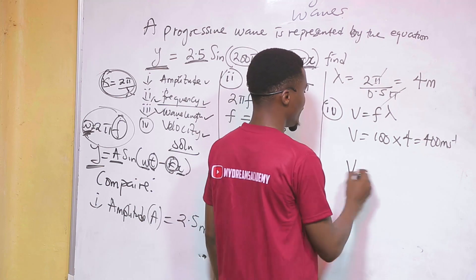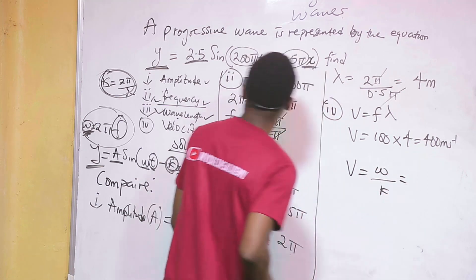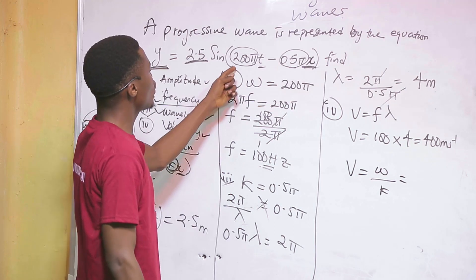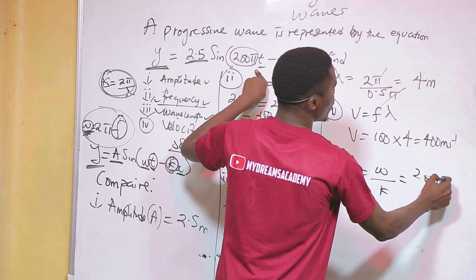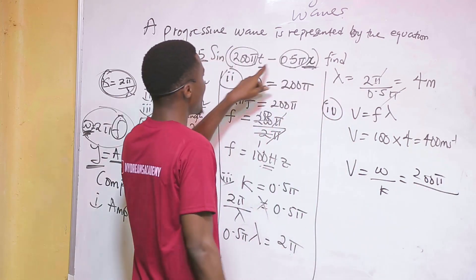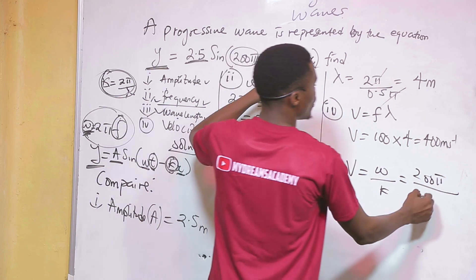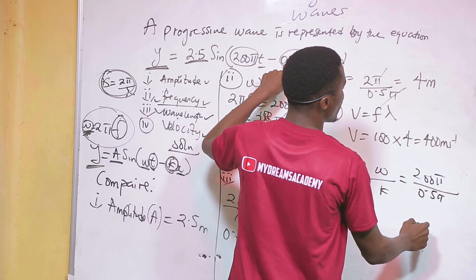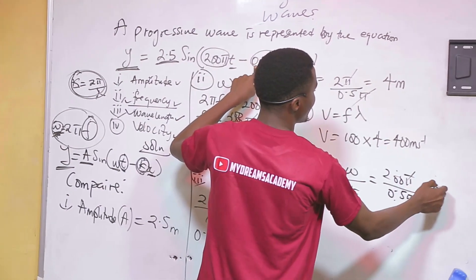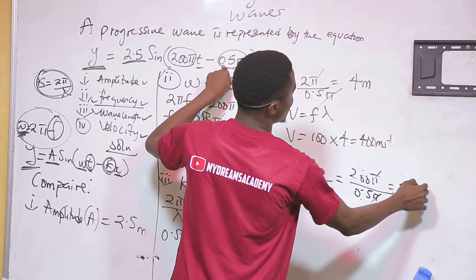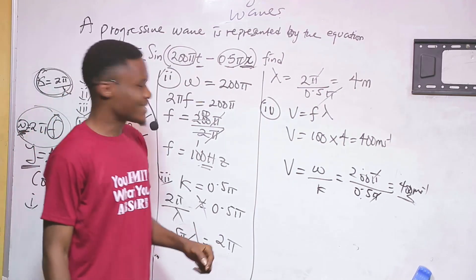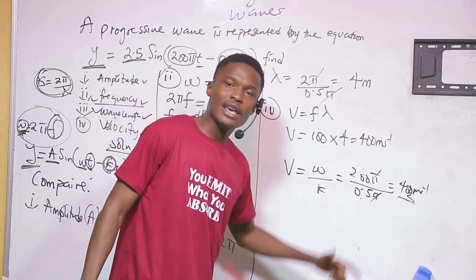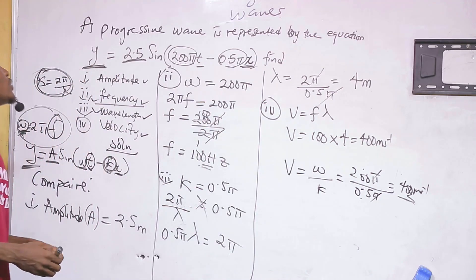There is also a shortcut formula: v equals ω over k. ω is whatever is in front of t, which is 200π, and k is whatever is in front of x, which is 0.5π. The π cancels and 200 divided by 0.5 gives 400 meters per second — the same answer. That is how you find velocity directly from the equation.